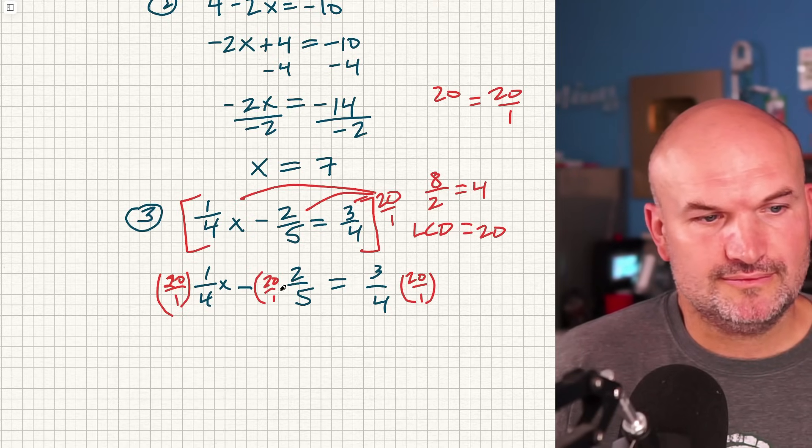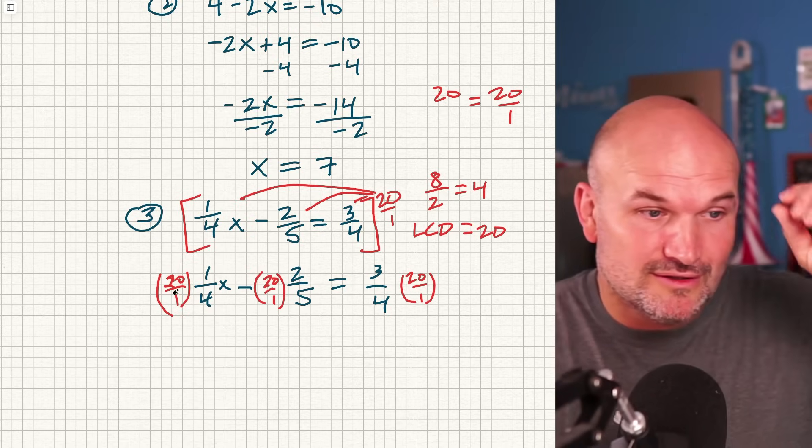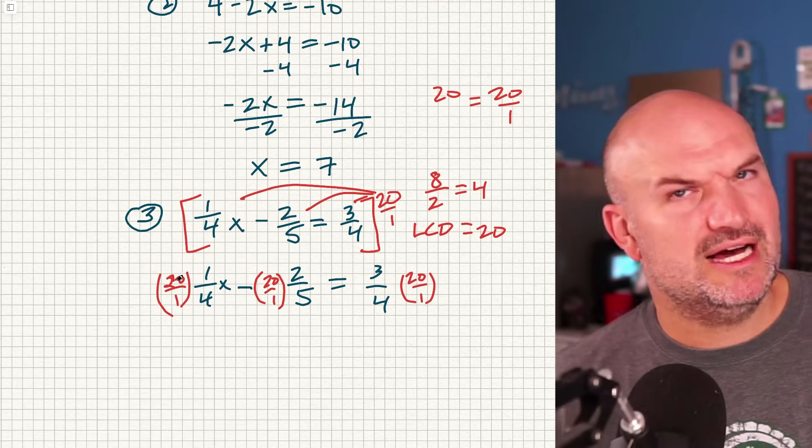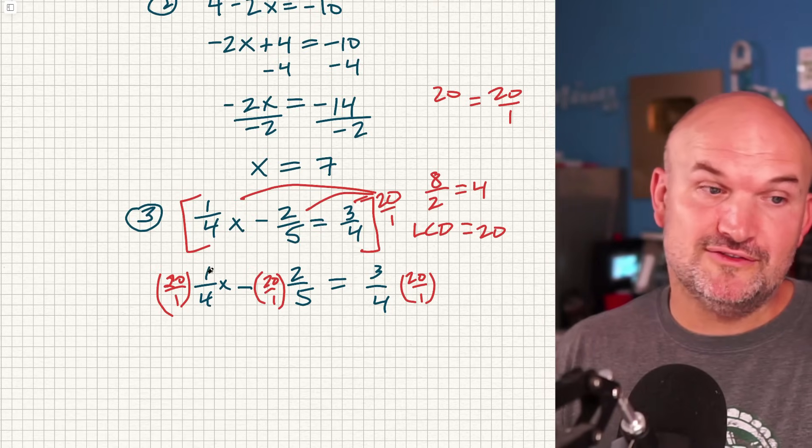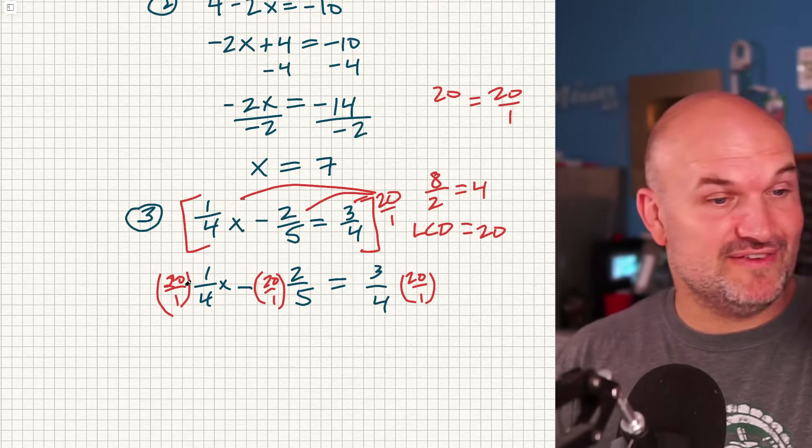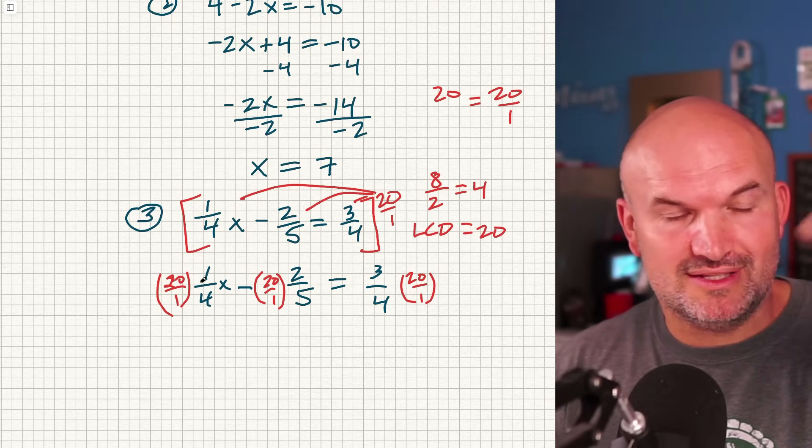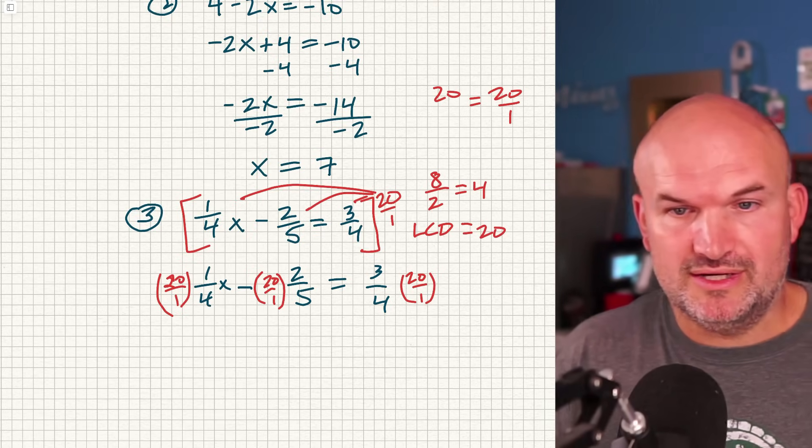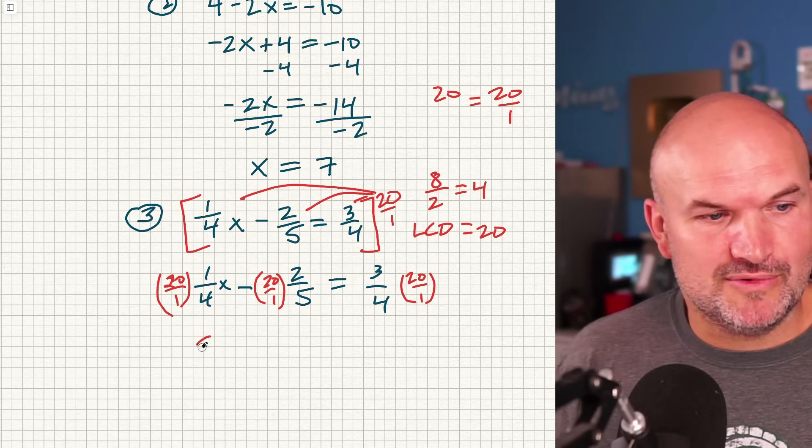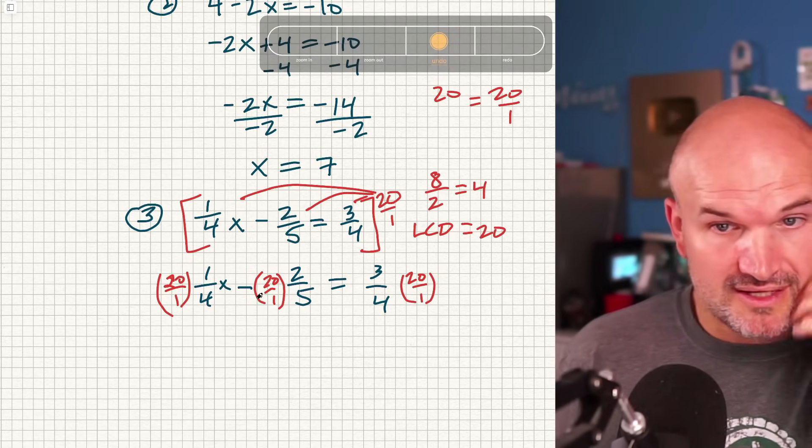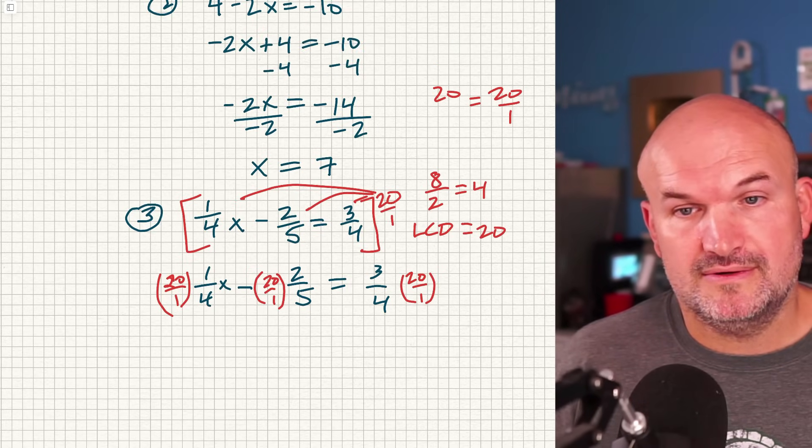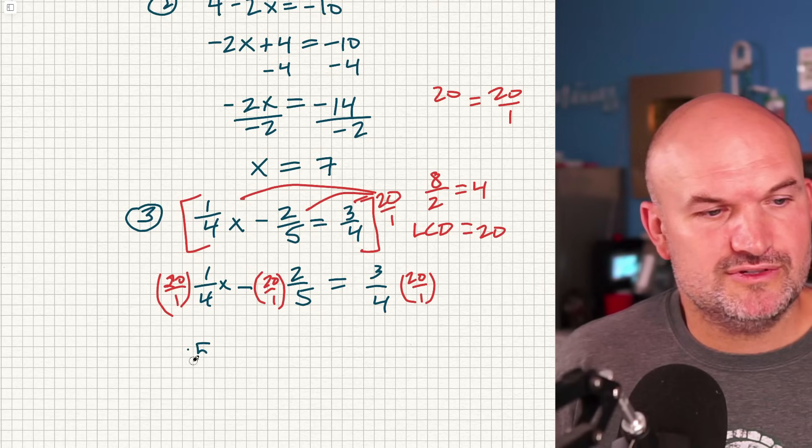Now again, remember, 4 evenly divides in 20. How many times? Four divides into 20 five times. So I can simplify this as 20/4 divided by 1/4 is the same thing as 5. And then 5 times 1 is just going to be a 5. So now I'm going to have a 5x. So that's going to be a 5x.